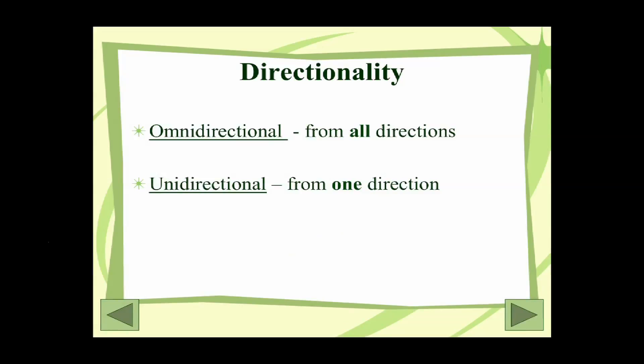With directionality, we're talking about how the microphone receives audio. With an omnidirectional microphone — omni means all — it's going to receive sound from all directions around it. A unidirectional microphone — uni means one — is going to ideally receive sound from only one direction.